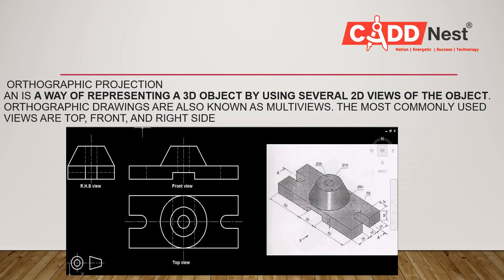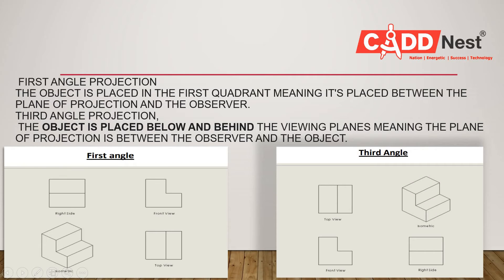Orthographic projection is a way of representing a 3D object using 2D views. Orthographic drawings are also known as multi-views, and the most commonly used views are the top, front, and right side. A 3D image is drawn in 2D showing left, top, and side views — this is called orthographic projection.